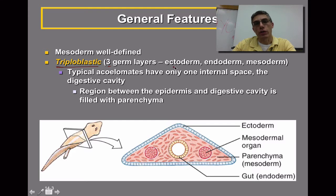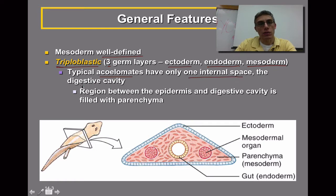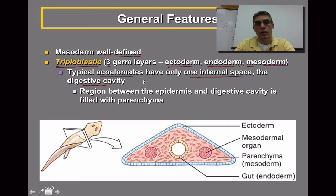The three germ layers are identified as ectoderm, endoderm — which we saw with the cnidarians — and a third called mesoderm, which is very well defined in the flatworms. These animals are also sometimes called acoelomates because they have only one internal space, and that internal space is called the digestive cavity, similar to the gastrovascular cavity we looked at in the cnidarians.